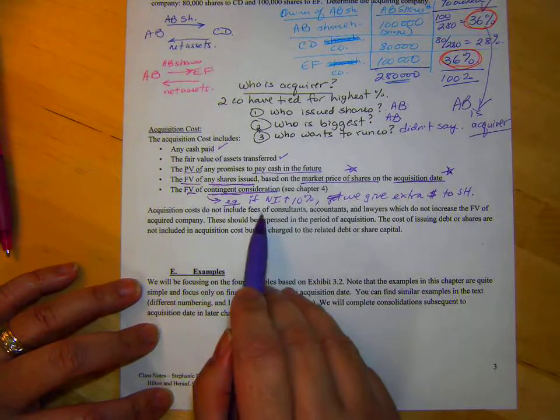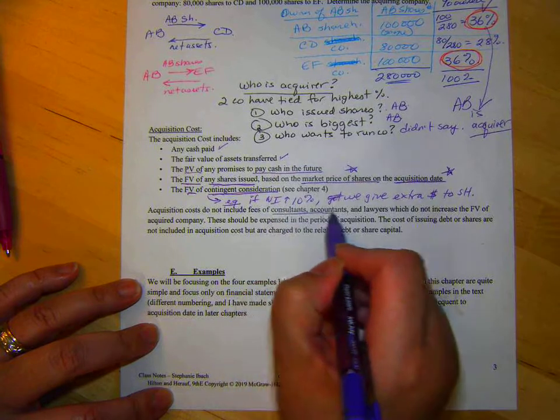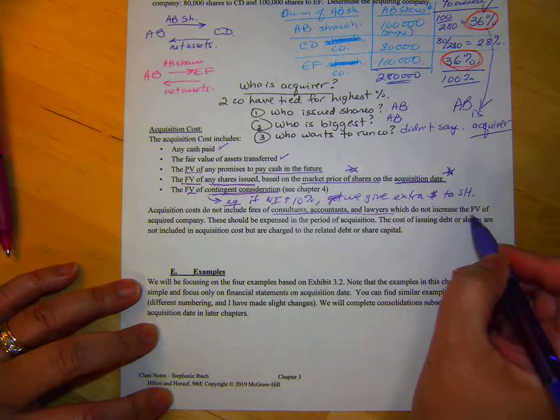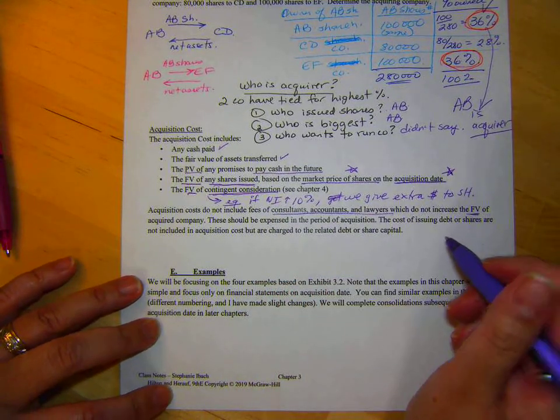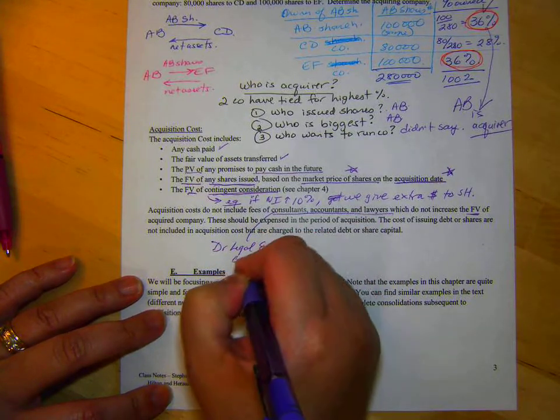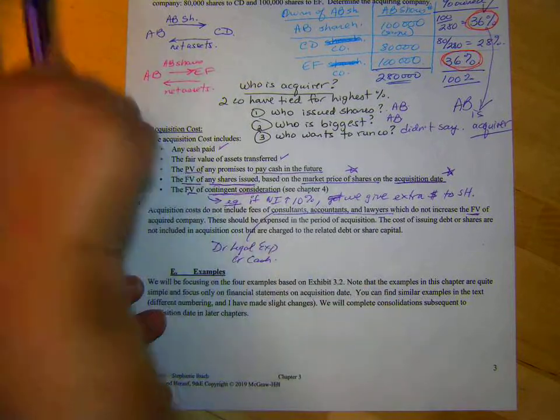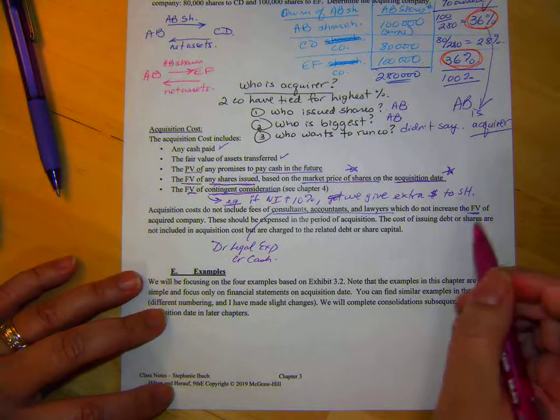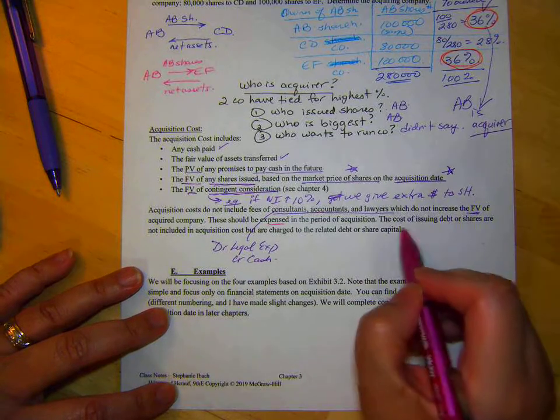Acquisition costs do not include the fees of consultants, accountants, and lawyers that don't increase the fair value of the acquired company. So, for example, that would be a debit to legal expenses and a credit to cash or whatever. The same way, so they're expensed in the period of acquisition.